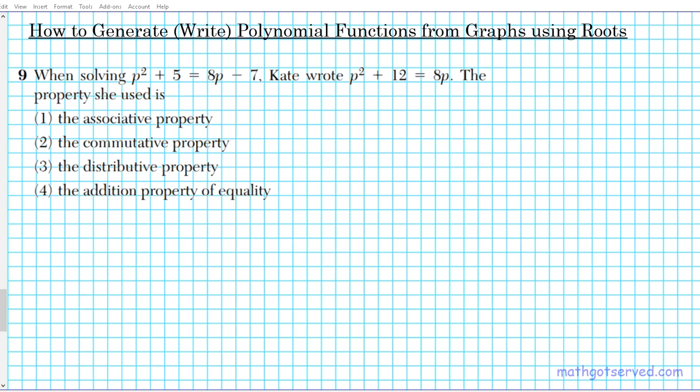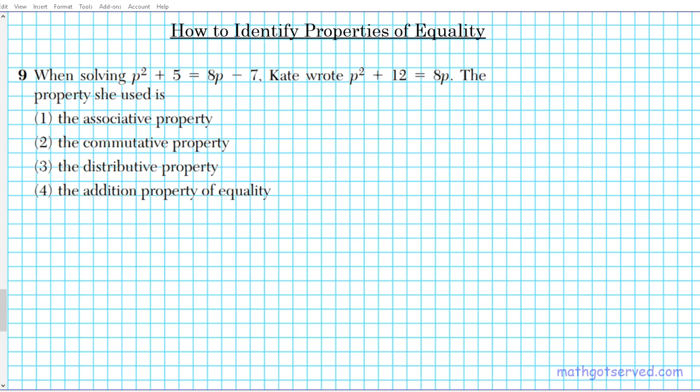All right, let's take a look at question number nine. In question nine, we've been assessed on how to make use of the properties of equality. We are going to be given two steps and basically our task is to identify what property of equality was applied in the algebraic simplification process.